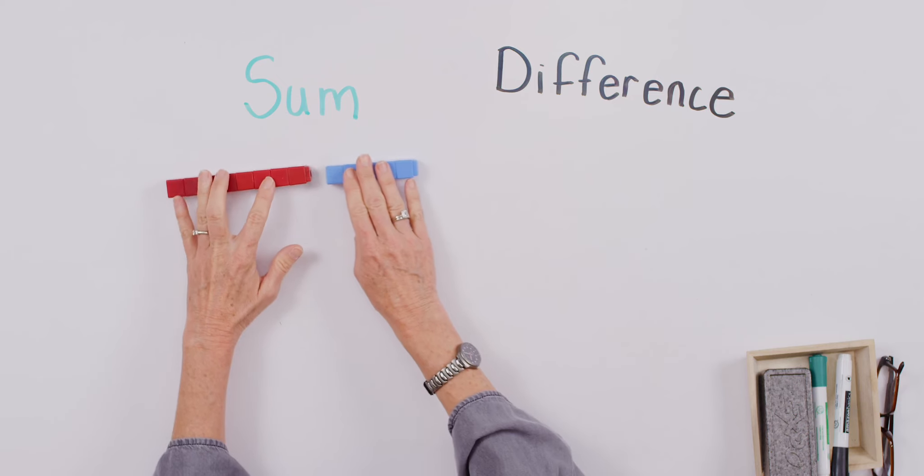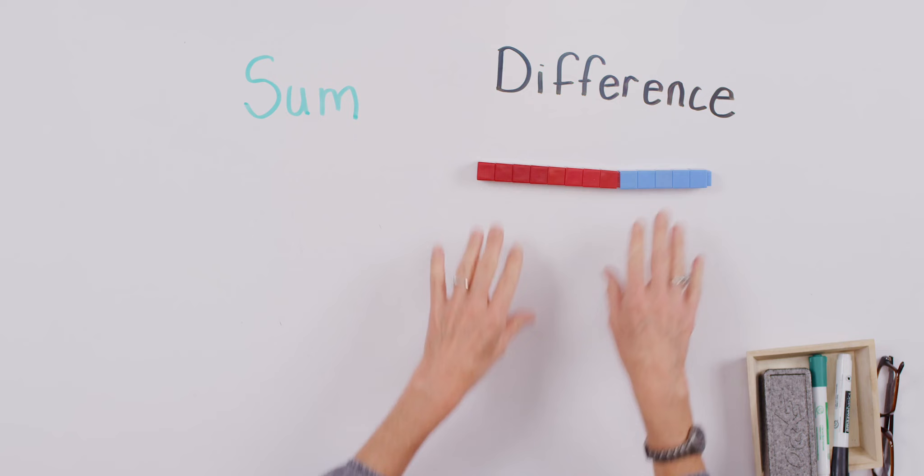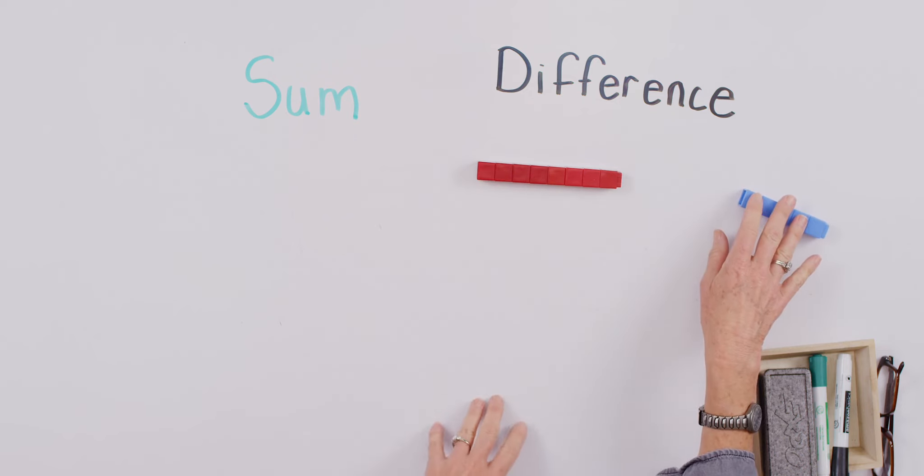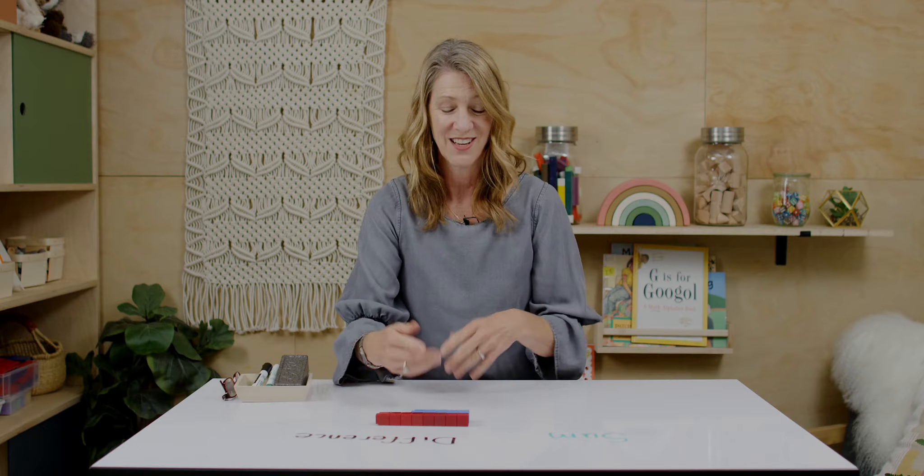When it comes to solving for a sum, we're talking about putting things together or adding them. When it comes to finding the difference, we're talking about taking something away or comparing. So let's do a little bit of that now together.